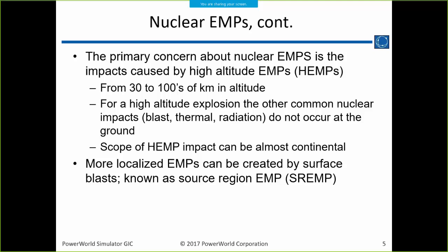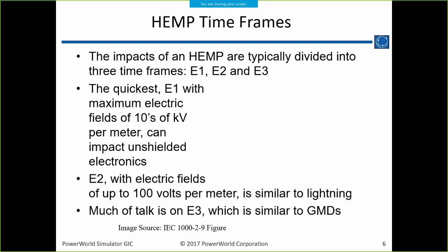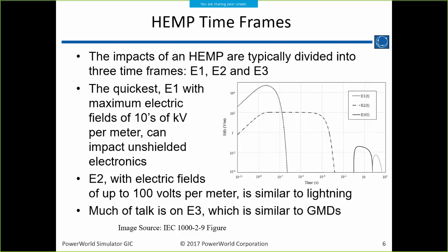With a high-altitude explosion, the common impacts from a nuclear blast — blast thermal radiation — do not occur on the ground. So they're sort of like the friendly nuclear explosion, I suppose. At surface blasts, we've got some other issues, especially if you're nearby.